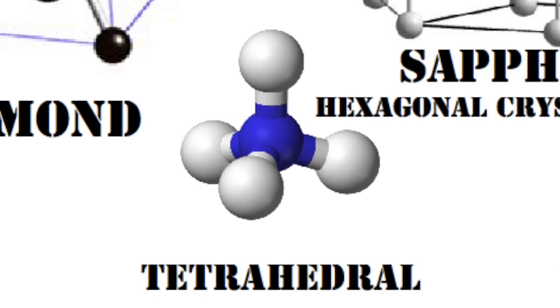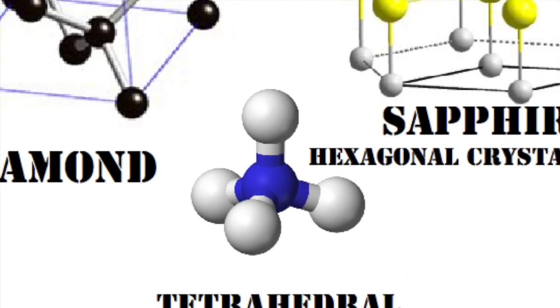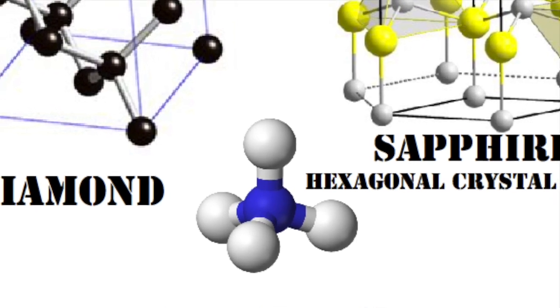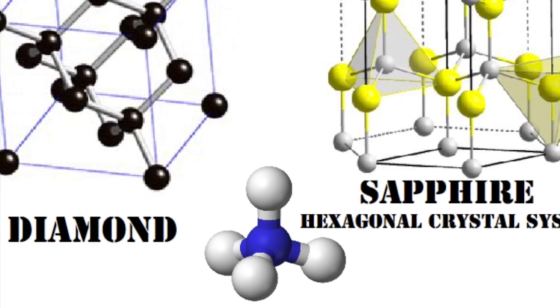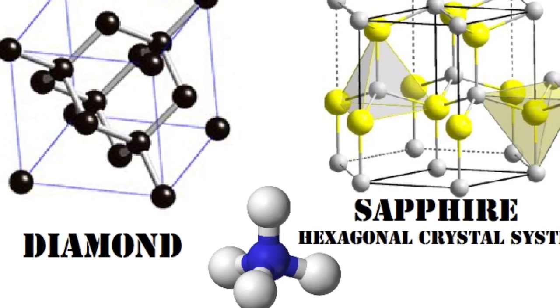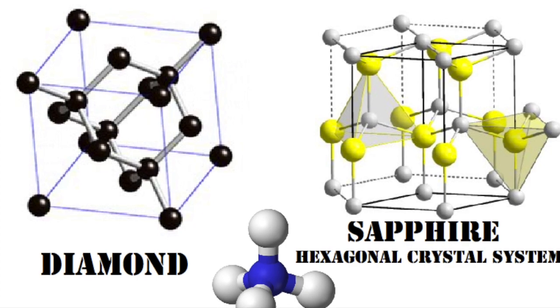The basic structure for both diamond and sapphire is tetrahedral. However, they are arranged in different ways. There is a special name for the structure of the sapphire, which is called hexagonal crystal system. Depending on that, diamond and sapphire are the hardest materials in the world.